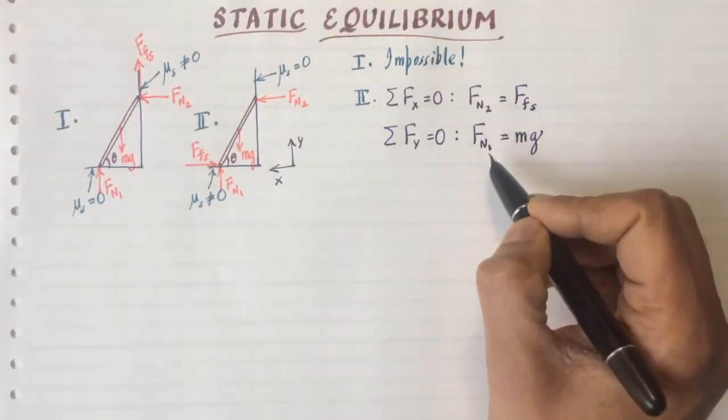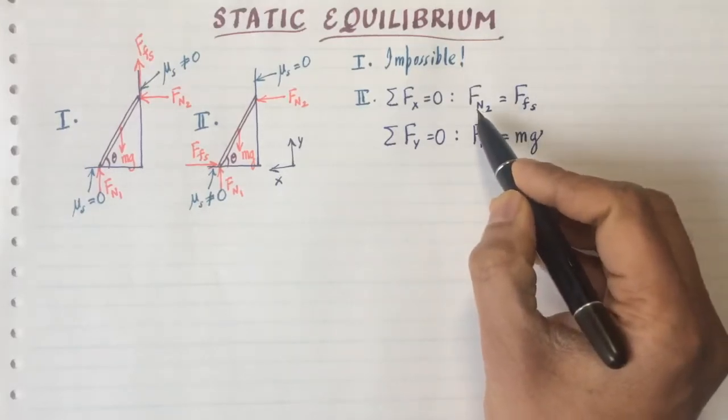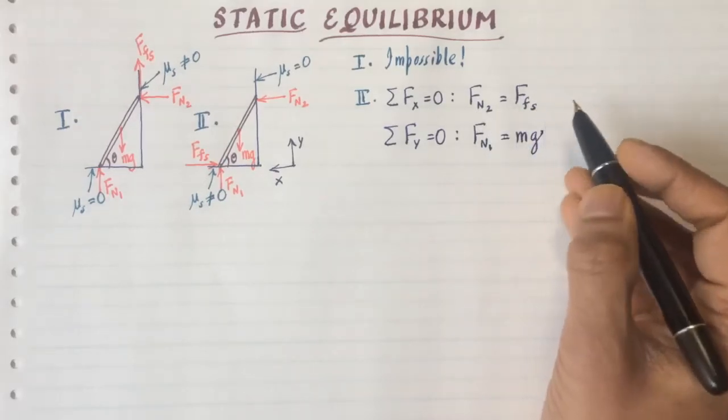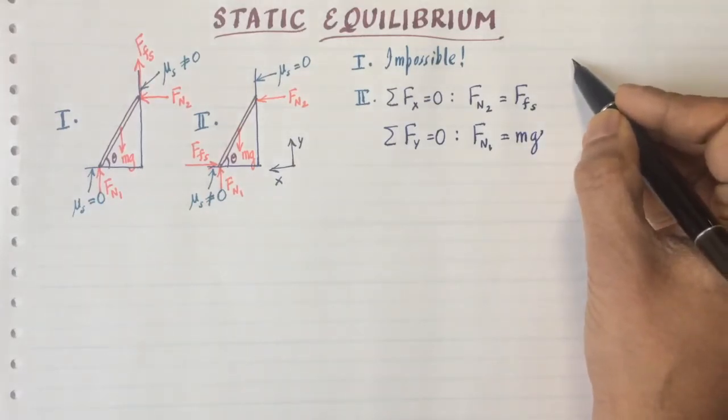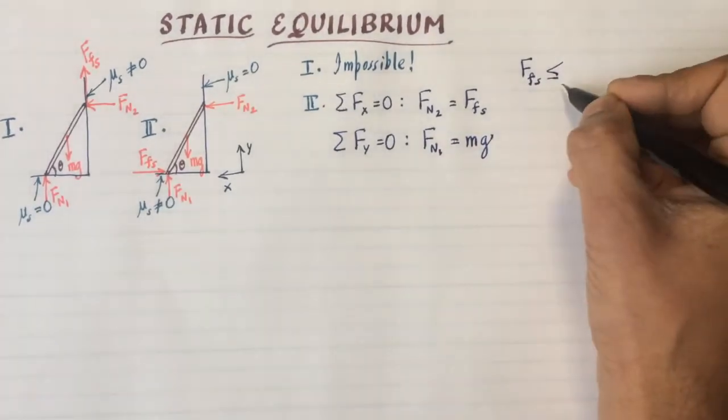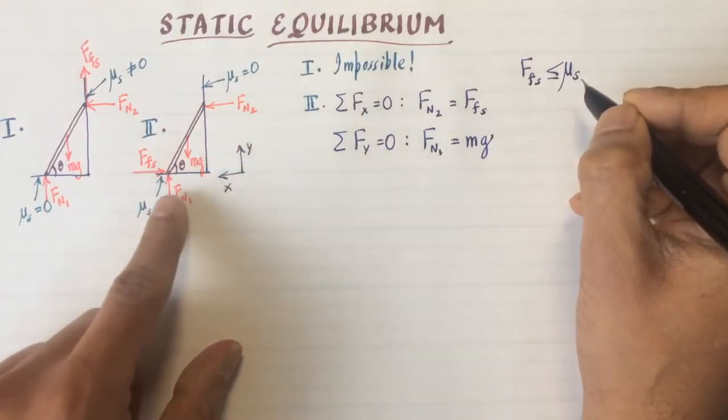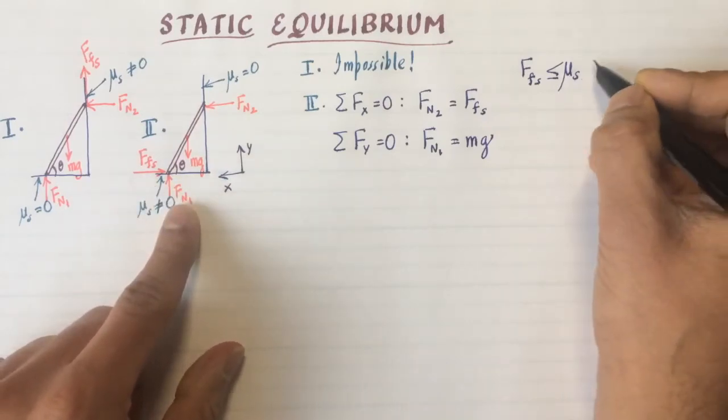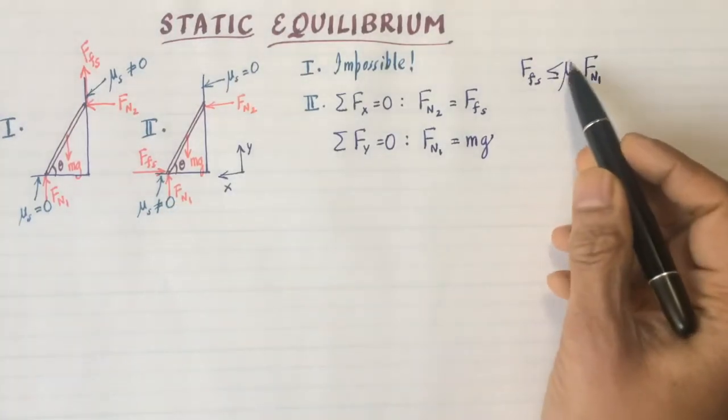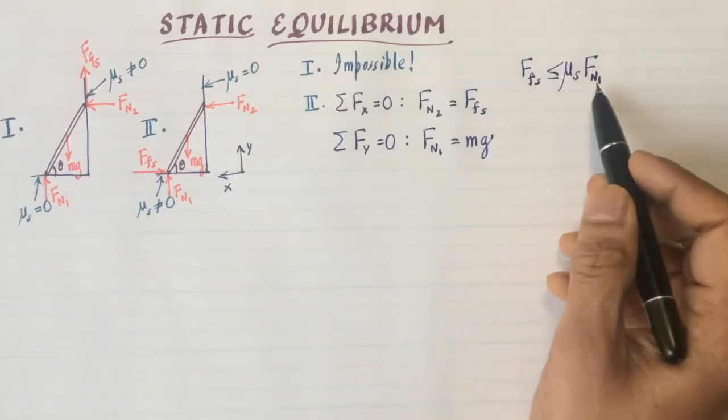And here's where you notice the problem. There are too many unknowns. You don't know Fn1, well, you know it equal to mg. So that's one equation and one unknown. But this is one equation for the two unknowns Fn2 and Ffs. Well, you may think, can I use the law of friction? You cannot, because the law of static friction is the following. The force of static friction is less than or equal to mu statics times the normal force. So unfortunately, that less than or equal to sign means that you cannot think of Ffs as being determined by Fn1. It's not. It's just an inequality.